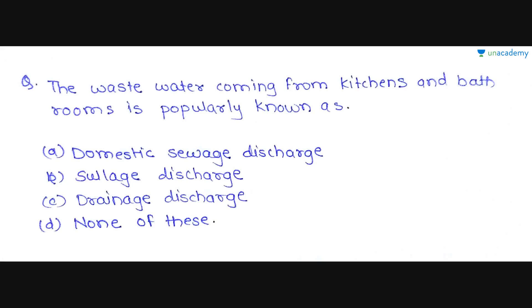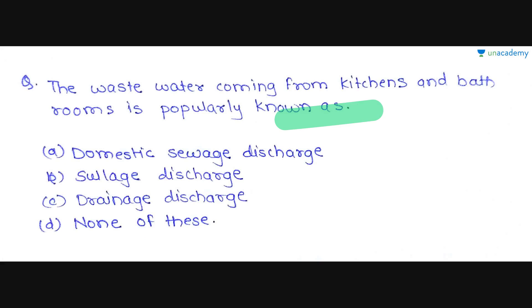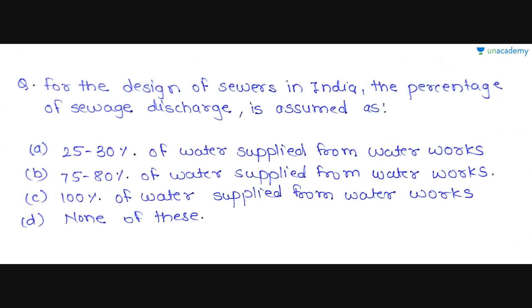The next question is: 'The wastewater coming from kitchens and bathrooms is properly known as —'. Options are: Option A — domestic sewage discharge; Option B — sullage discharge; Option C — drainage discharge; Option D — none of these. Sullage is wastewater from bathrooms, wash basins, and kitchens, which is less foul in nature. So Option B — sullage discharge — is the correct answer. Please remember this term as it can be asked in exams.